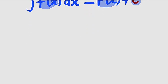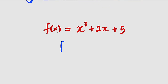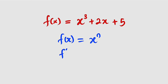Suppose we have a simple function like this, which is x cubed plus 2x plus 5. Let us differentiate this function first. Whenever you are given a function f of x equal to x to the power of n, to differentiate this function, which is f prime of x, the n will drop down to multiply, and you have to subtract 1 from that n.